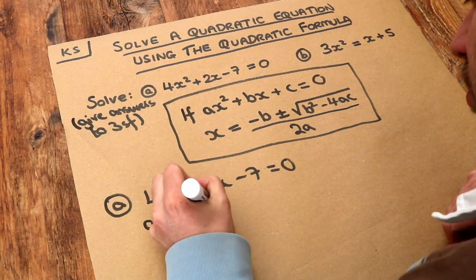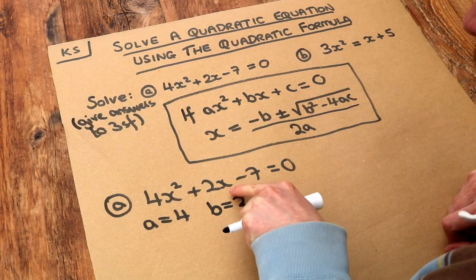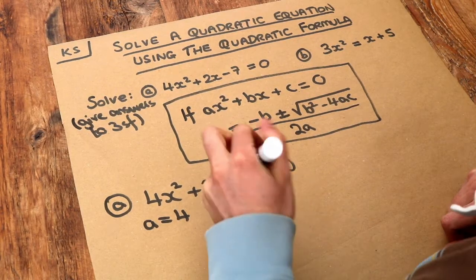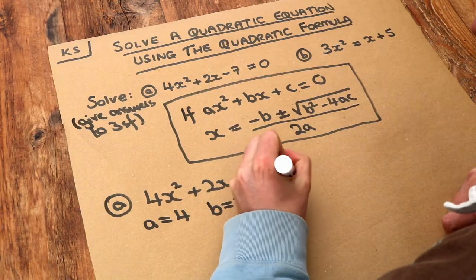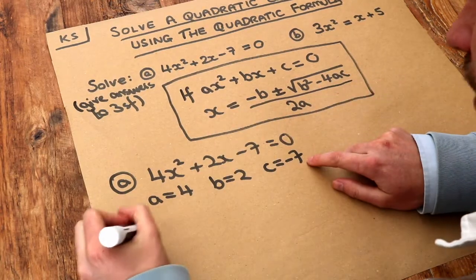B is the number in front of the x which is 2 here, and c is this final number. We've effectively got plus negative 7 so c is minus 7. Don't forget the sign in front of the number, and then we're just going to substitute it into this formula.